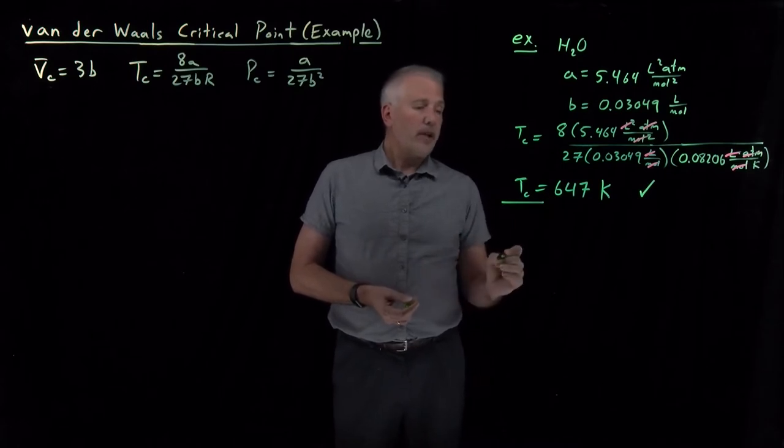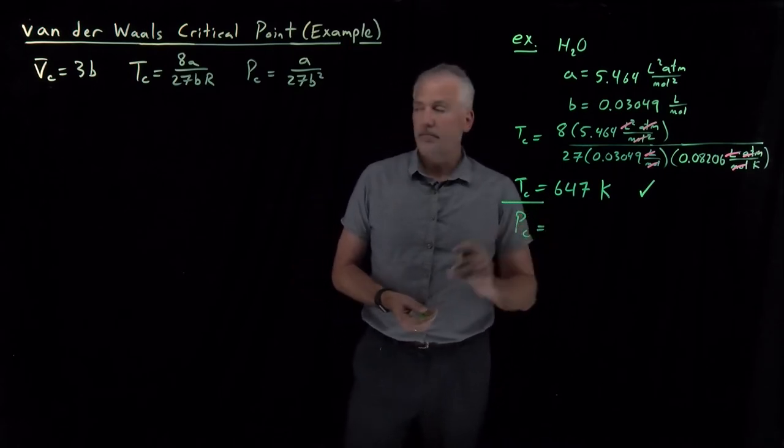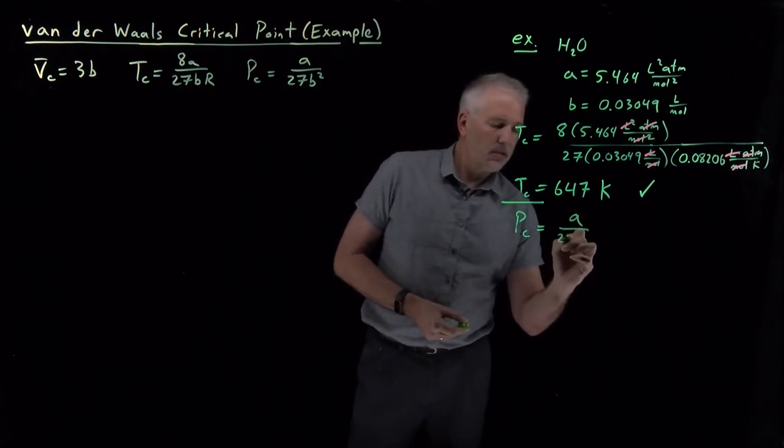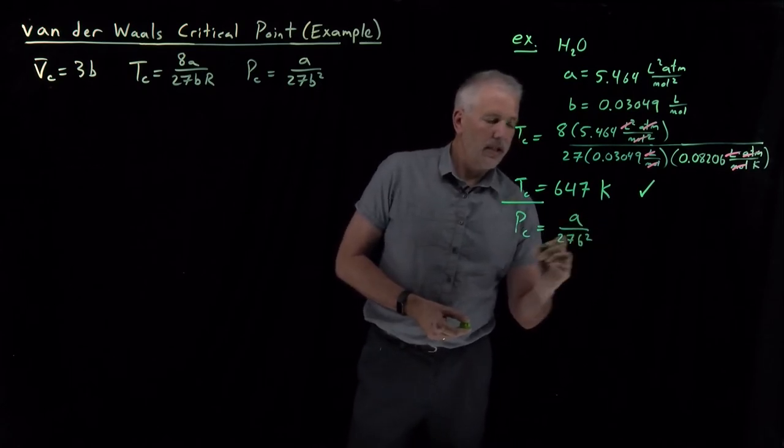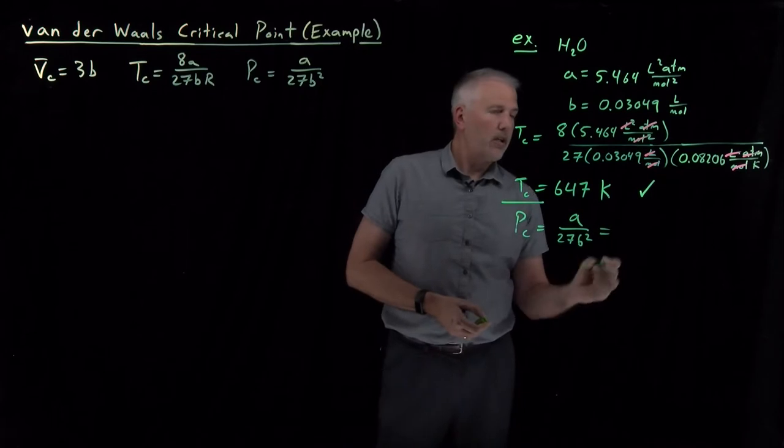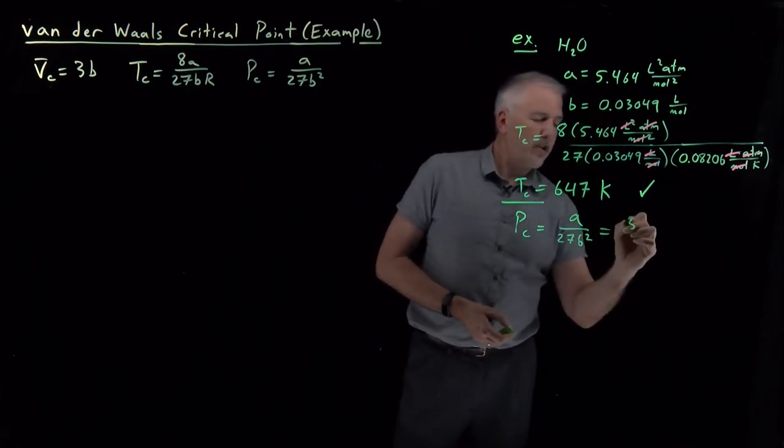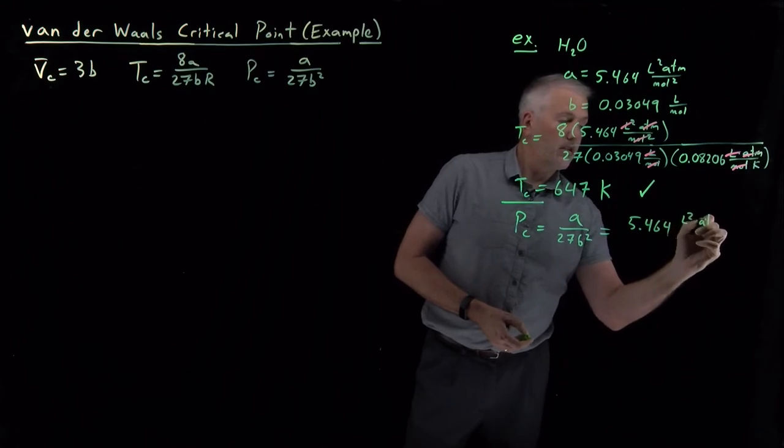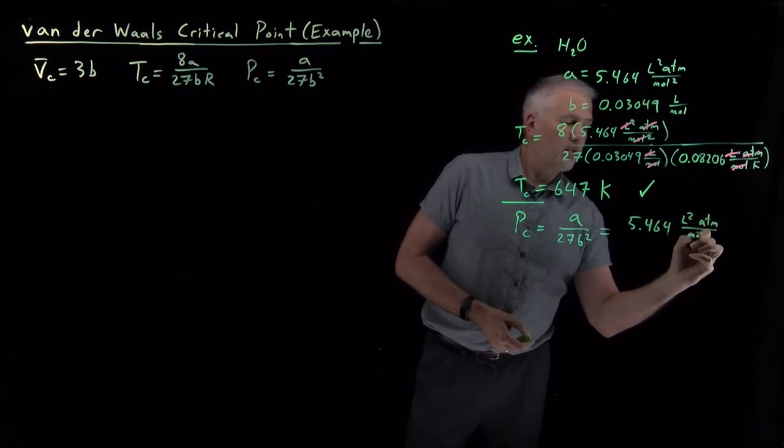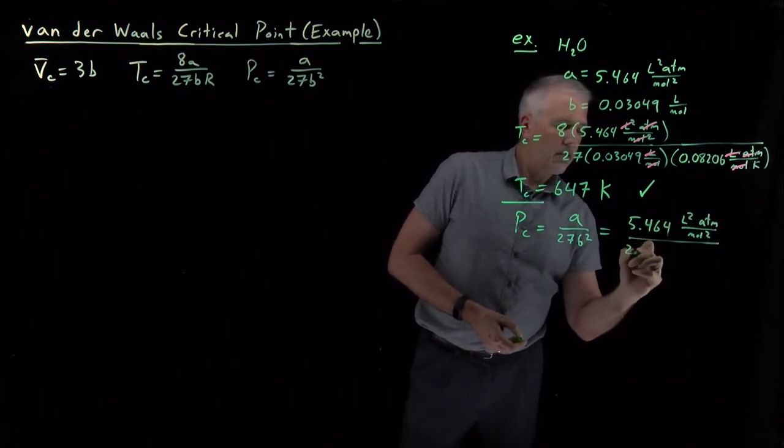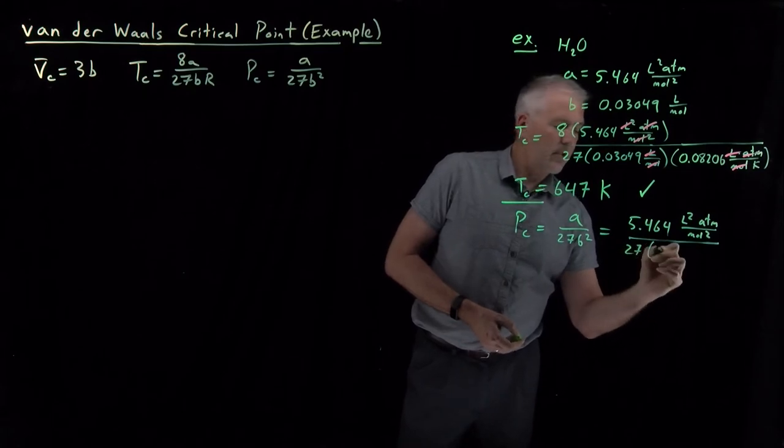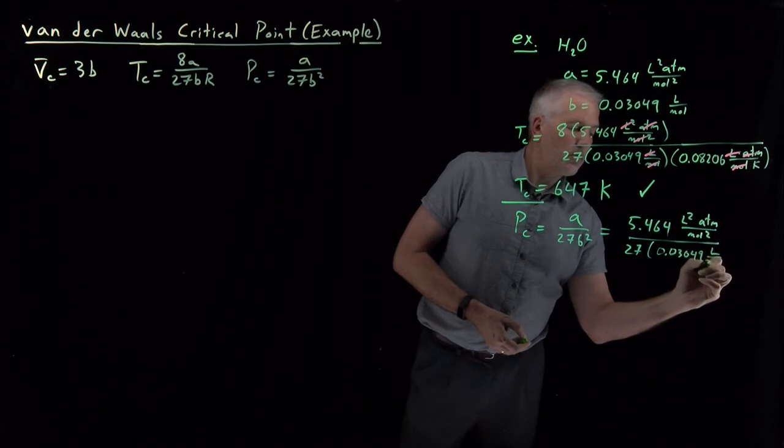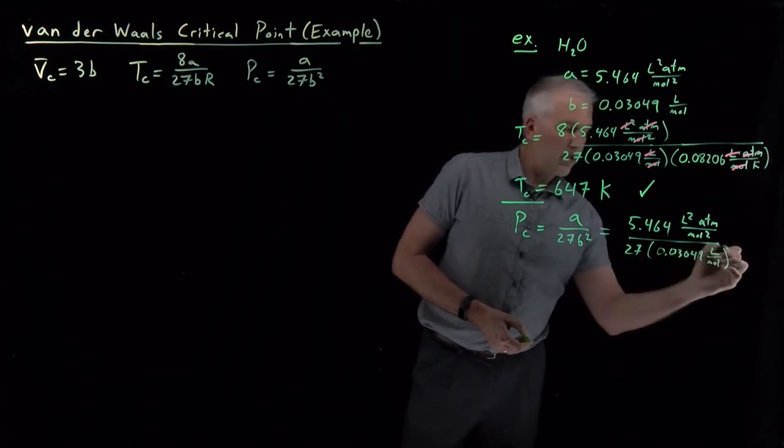The pressure of that critical point we can calculate as well. A over 27B squared, so plugging in our values for A and for B.